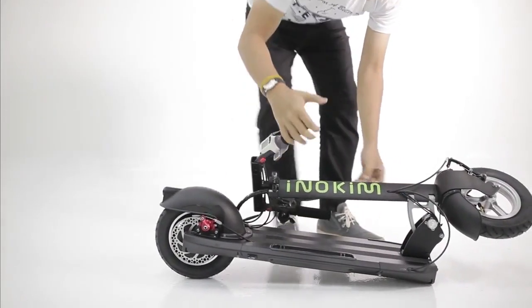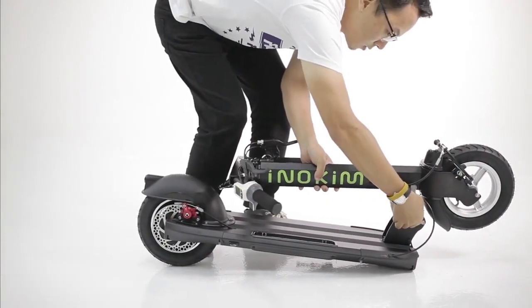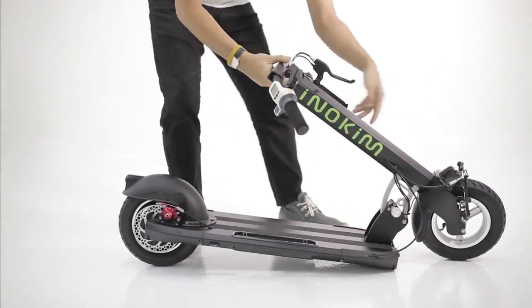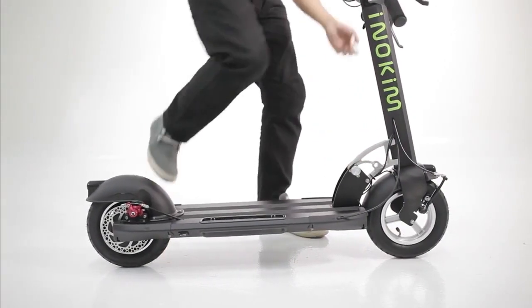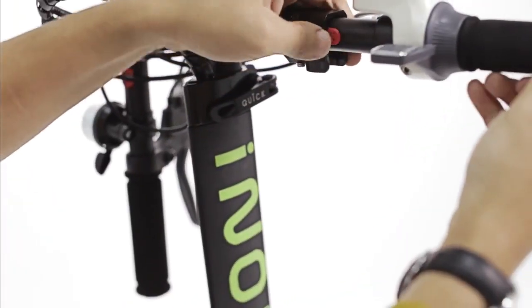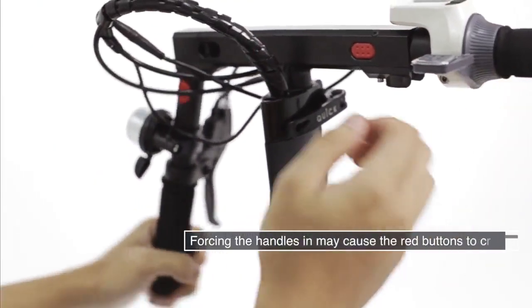To unfold, pull the locking pin outwards while lifting the stem. Extend the stem up completely till the pin locks back in place. Bring the handles up and in while holding the red buttons.